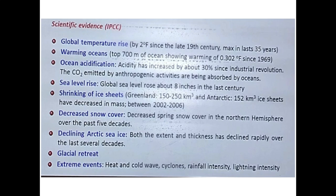Glacial retreat is also observed — glaciers that are the origin of rivers like the Ganga and Yamuna, such as Gangotri and Yamunotri, had their source at a certain location several decades ago, but now that origin point is shifting backward due to ice melting. Extreme events such as heat waves, cold waves, cyclones of increasing frequency and intensity, changing rainfall patterns, and increased lightning intensity are also occurring because of climate change.